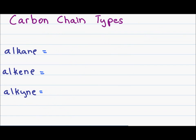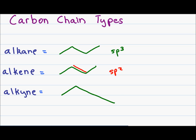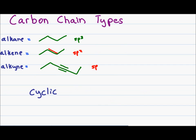We also have different types of carbon chains. A chain that has only sigma or single bonds is classified as an alkane, and this will have sp3 hybridization. An alkene has at least one pi bond or carbon-to-carbon double bond, and this will be sp2 hybridized and trigonal planar about the double bond. An alkyne is classified as having at least one triple bond in the molecule, and this triple bond will be linear and 180 degrees because it is sp hybridized. You may also come across cyclic molecules, which are simply carbon chains attached in a circle, like a cycloalkane or a cycloalkene.